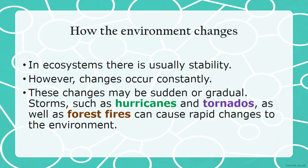Storms such as hurricanes and tornadoes, as well as forest fires, can cause rapid changes to the environment. Those pictures that you saw depicted hurricanes, the effects of tornadoes, and also the effects of forest fires.